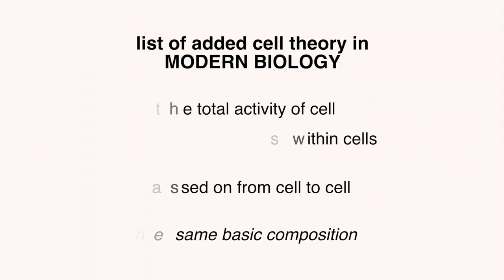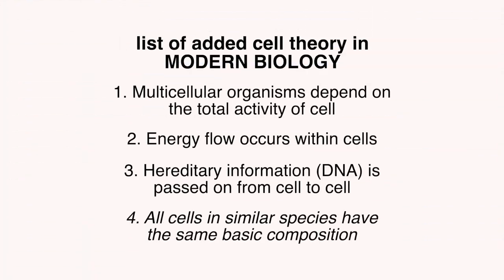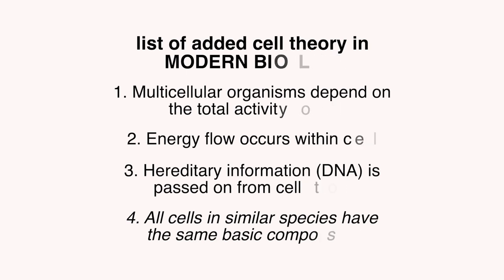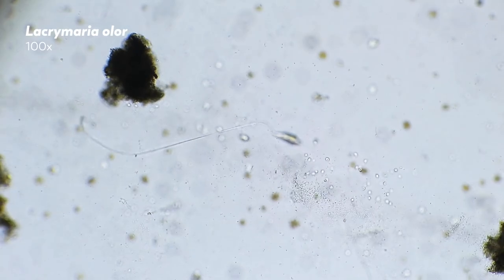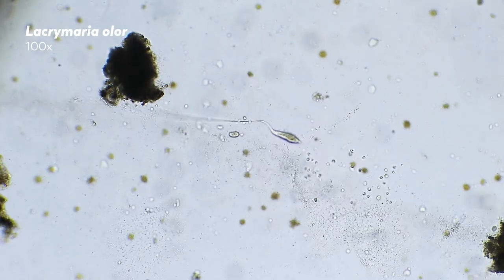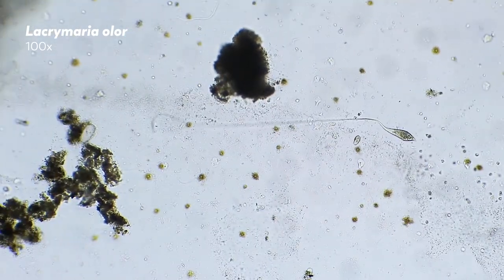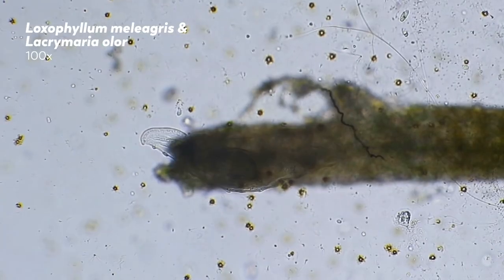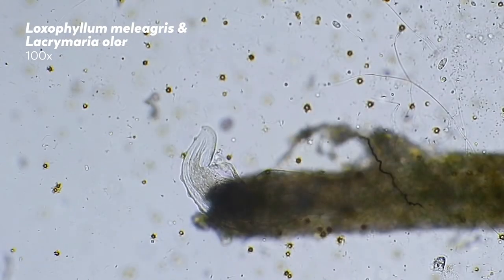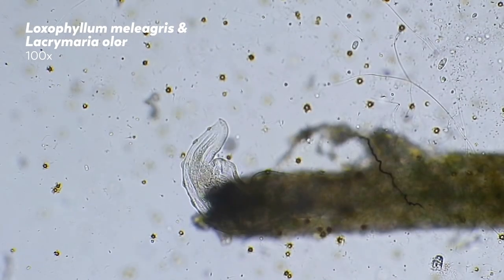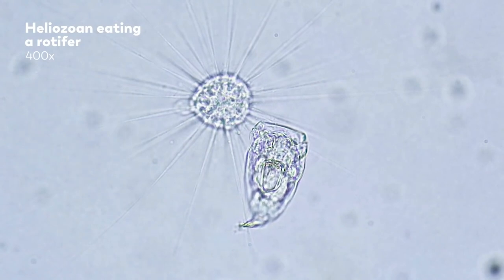There are still some scientists who believe in spontaneous generation, and what's good about cell theory is that it is still evolving. In fact, in modern biology, there is a new list of cell theory additions. Scientists now understand that there are billions of cells working together in every sort of activity, that energy flow occurs within our cells as needed, that cells contain DNA information passed down to the next generation of cells, and that all cells in similar species have the same composition.